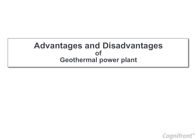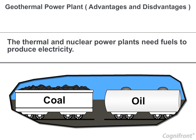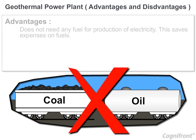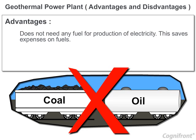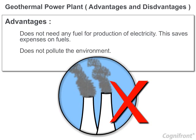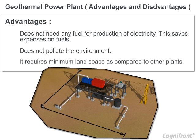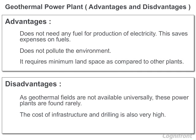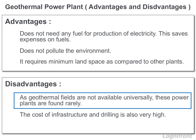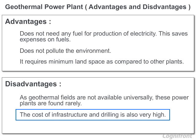Advantages and disadvantages of a geothermal power plant. Thermal and nuclear power plants need fuel to produce electricity, whereas a geothermal plant does not need any fuel for production of electricity, which ultimately saves expenses on fuel. A geothermal plant does not pollute the environment and requires minimum land space compared to other plants. However, geothermal power plants have some disadvantages. As geothermal fields are not available universally, these power plants are found rarely. The cost of infrastructure and drilling is also very high.